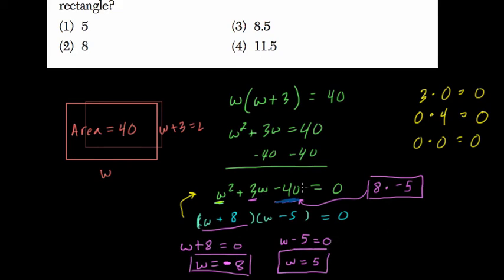So our width is 5, but we don't want the width, we want the length. The length is 3 more than that, and the length is choice 2, or 8.